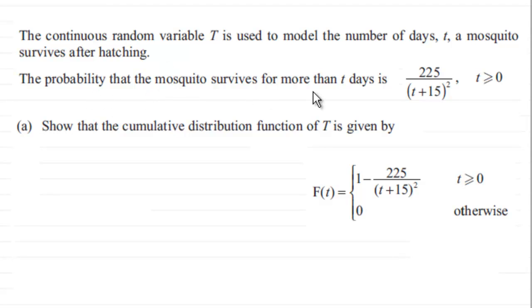The probability that the mosquito survives for more than t days is given by 225/(t+15)², where t is greater than or equal to zero.